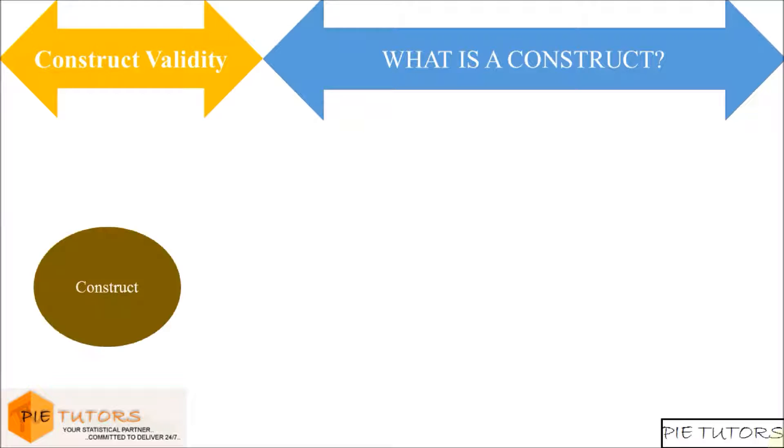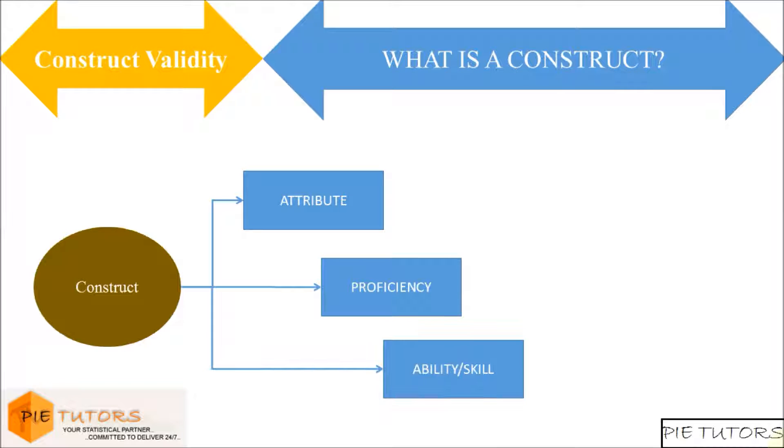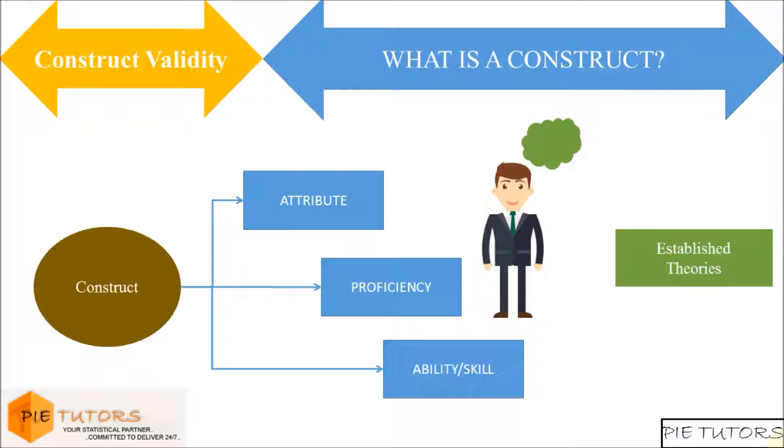A construct can be understood as an attribute, proficiency, ability, or skill that happens in the human brain and is defined by established theories. For example, overall English language proficiency is a construct. It exists in theory and has been observed to exist in practice.